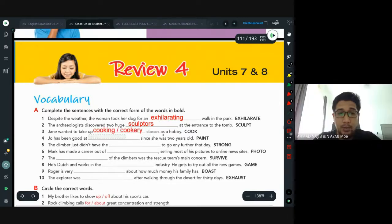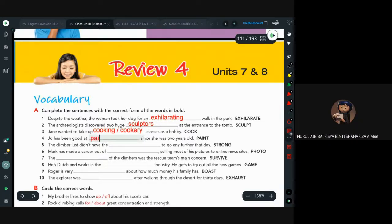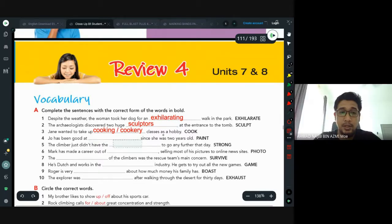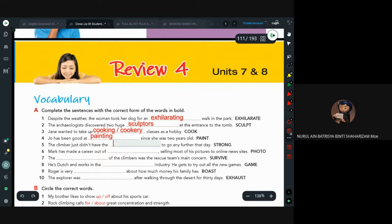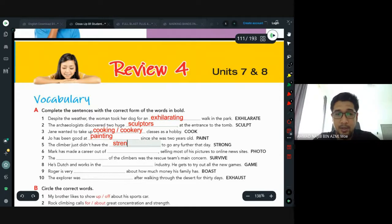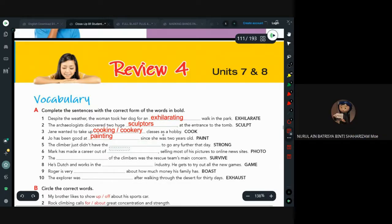Four: Joe has been good at painting since she was two years old. Next one: the climber just didn't have the strength to go any further that day. Mark has made a career out of photography.